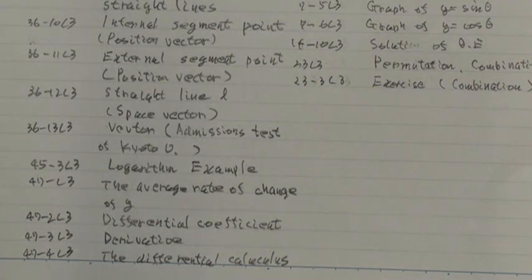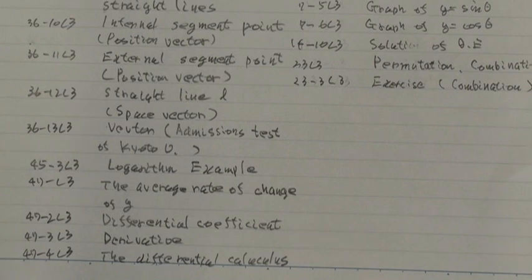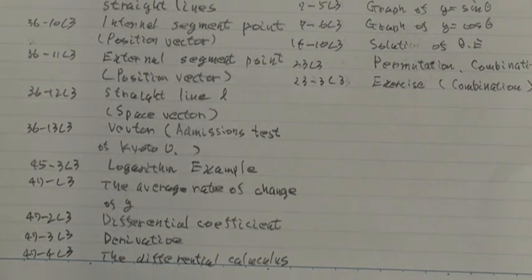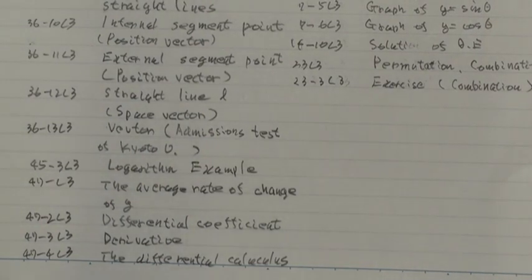And next, 36th branch 12LT, straight line L, space vector.